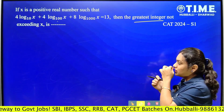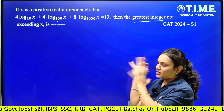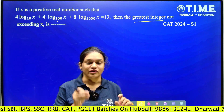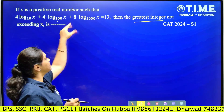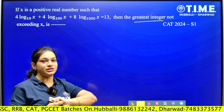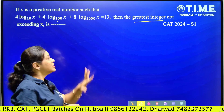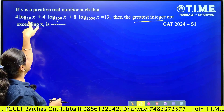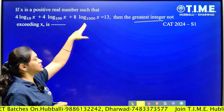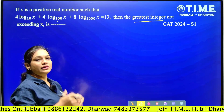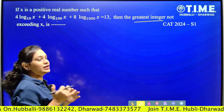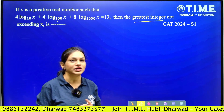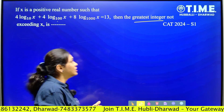First, analyze the question. In case of logarithm, if we have a plus sign in between, the base should be the same. In this question, the bases given are 10, 100, and 1000 — so the base is not common. But since 100 and 1000 are multiples of 10, we can take base 10 as the common base.